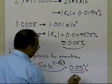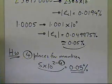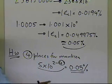So if I look at any other number for the same example, will I always get the value of the relative true error less than 0.05 percent?